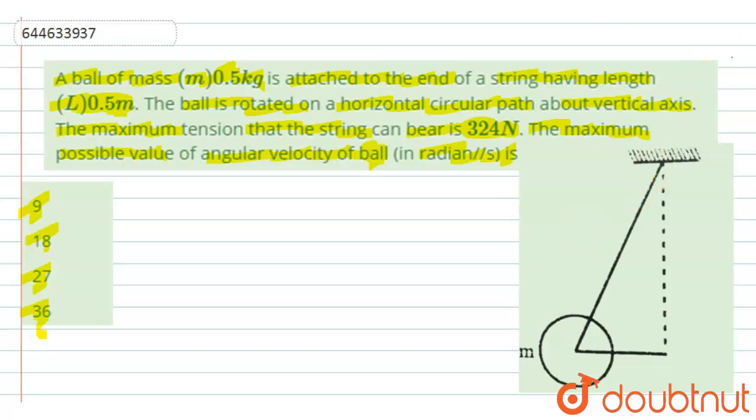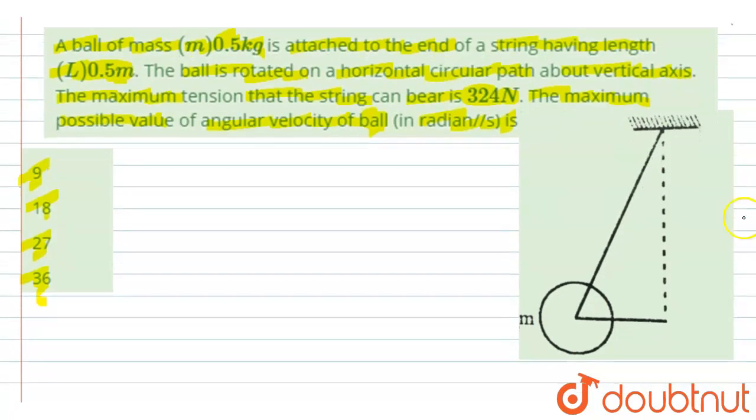The question is given that we have a mass like this and it is performing a circular motion in the horizontal about a vertical axis. So this is the vertical axis. Let this point be O and this point be A. It is performing a horizontal circular motion like this.